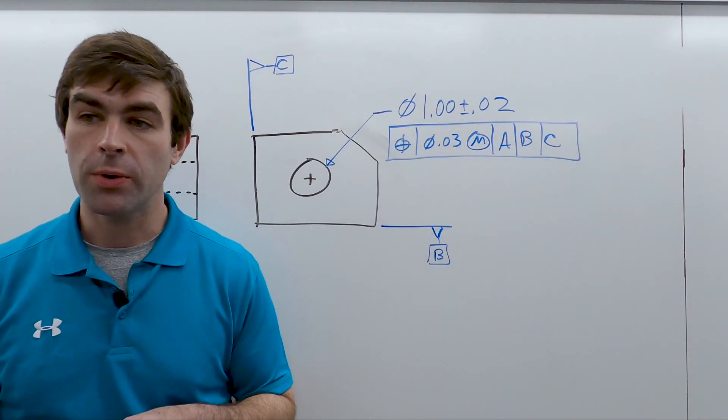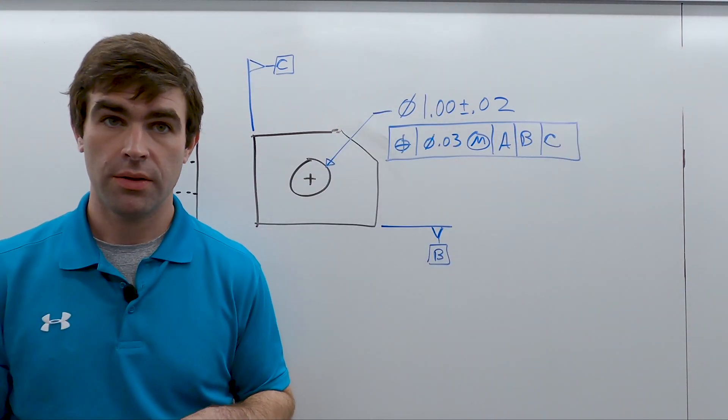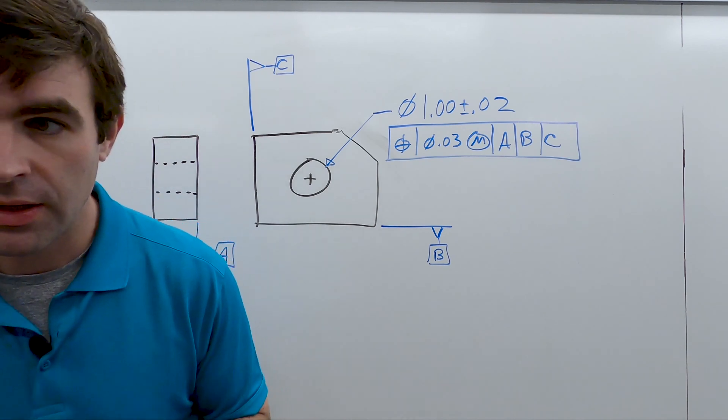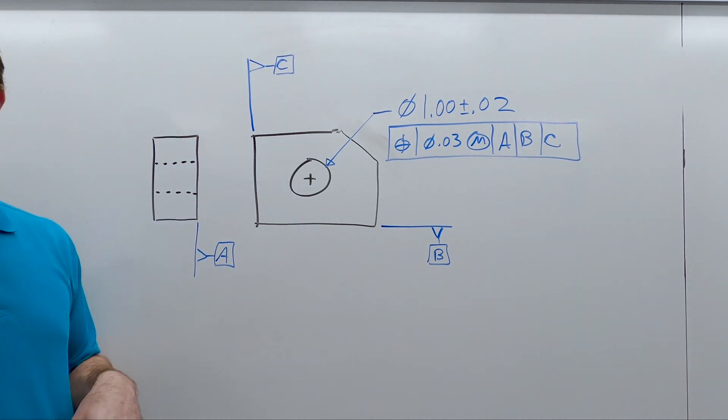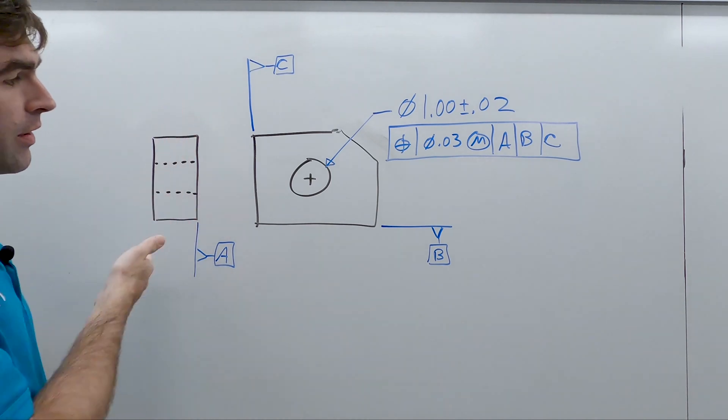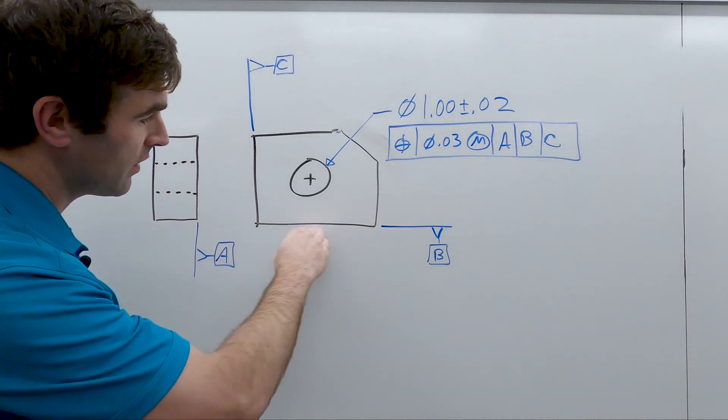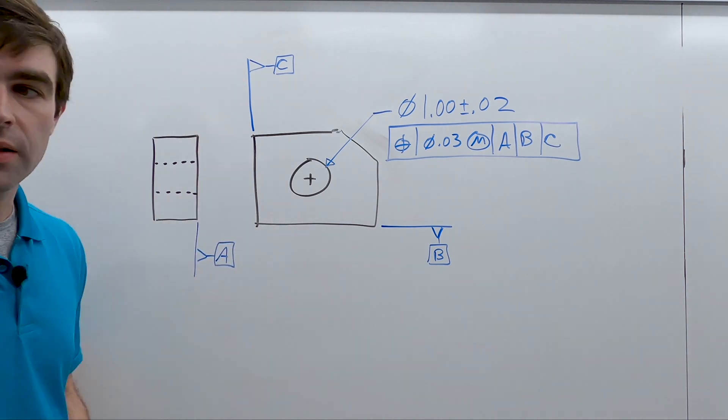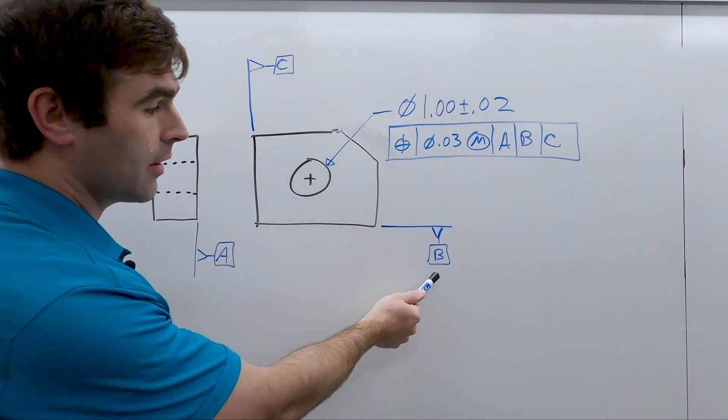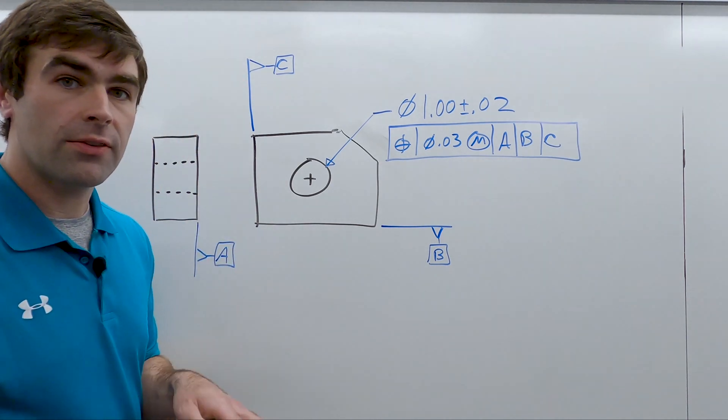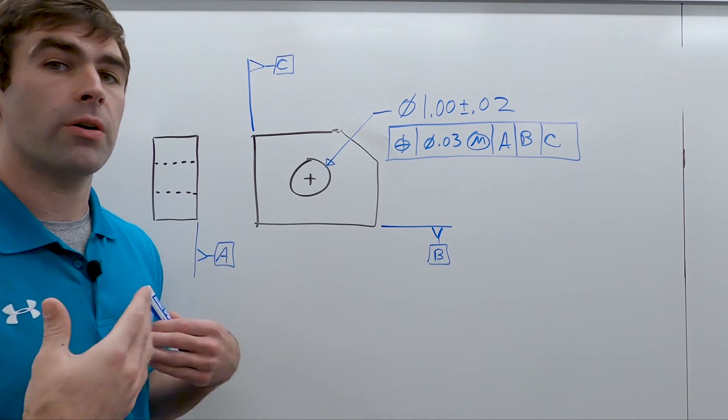So let's take a quick look at how this works, how the setup works. I've got a simple part. I've got a block with a hole in it. Datum A is this big flat surface. Datum B is this side. Datum C is this side. Remember, the datum feature symbol indicates which physical features are the datums.